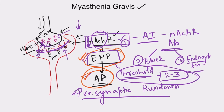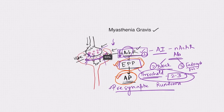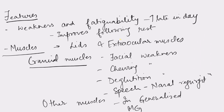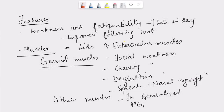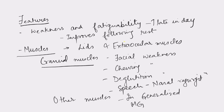The features of myasthenia gravis include weakness and fatigability. This weakness and fatigability may be okay in the morning but increases late in the day — that is very important. It improves following rest, because the store of acetylcholine vesicles gets repleted and can again be released from the presynaptic terminal in much greater amounts.